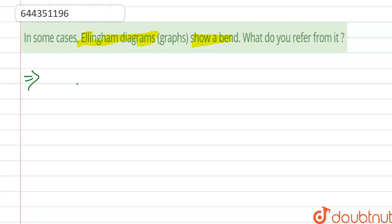First, we need to know what is an Ellingham diagram. So, here a graph shows the temperature dependence on the stability of the compound. An Ellingham diagram shows the temperature dependence on the stability of the compound.